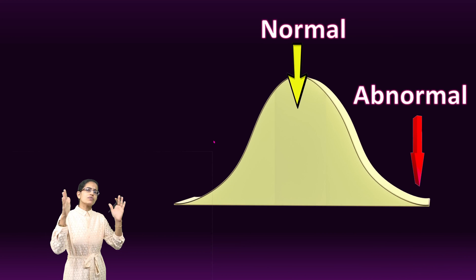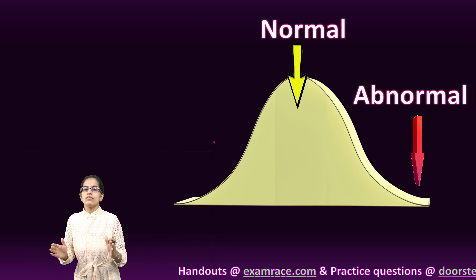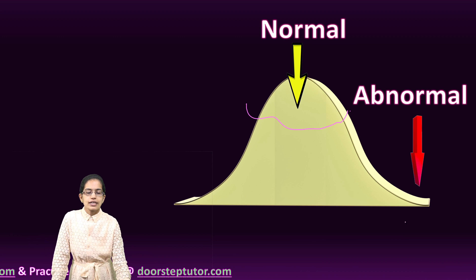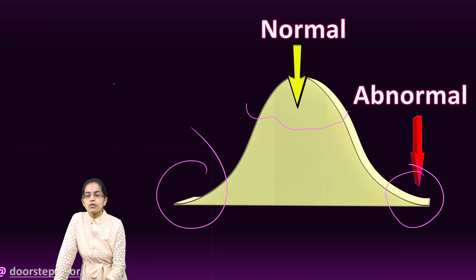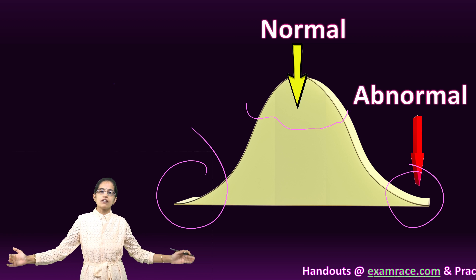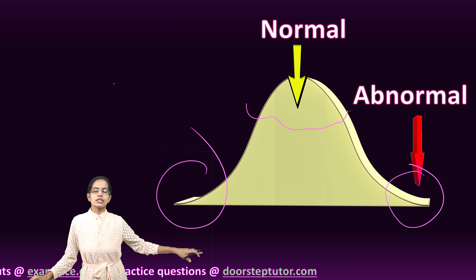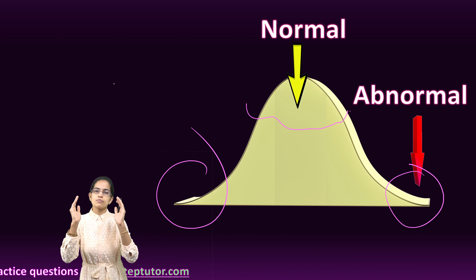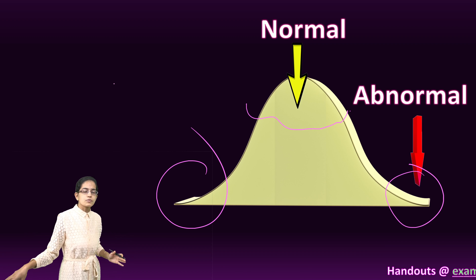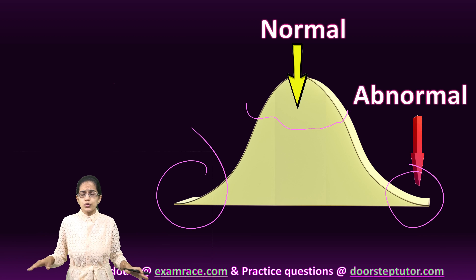Most of the population lies within the normal curve. On a normal distribution curve, a substantial section lies within the segment of normality, but there are extreme scenarios of abnormality toward the tails. For example, a student who does not speak at all or continuously keeps speaking would be considered abnormal in a classroom setting, while most students speaking when required represents normal behavior.